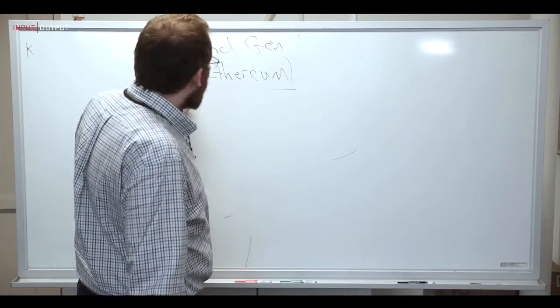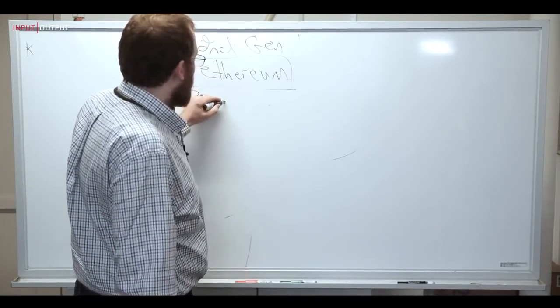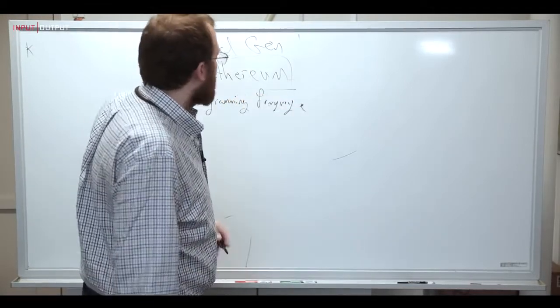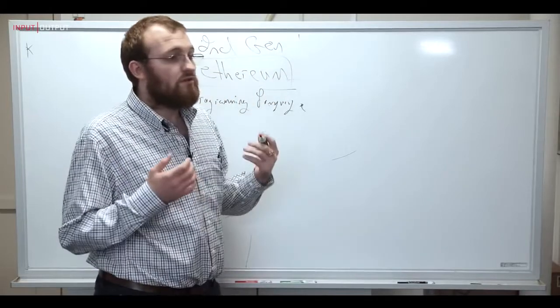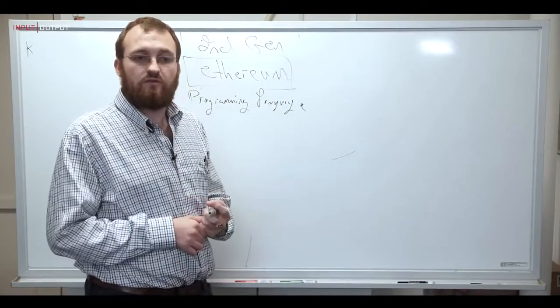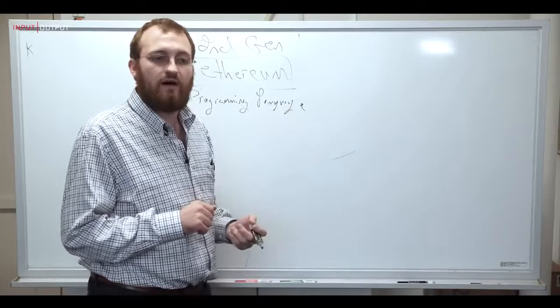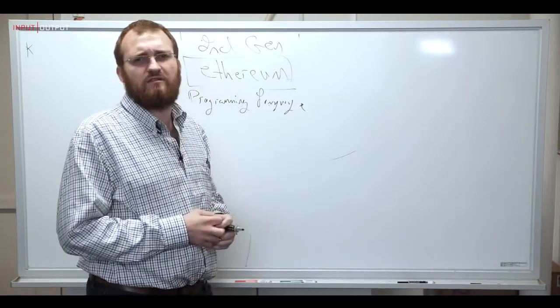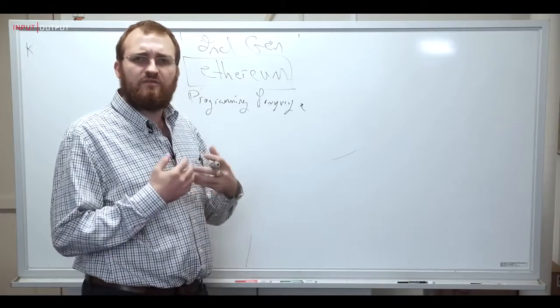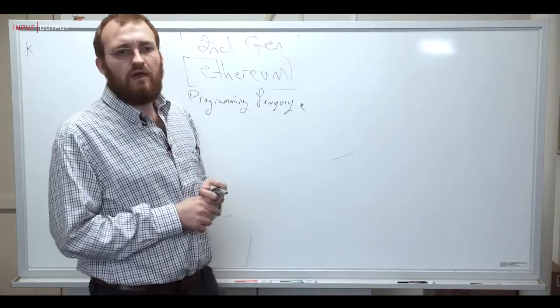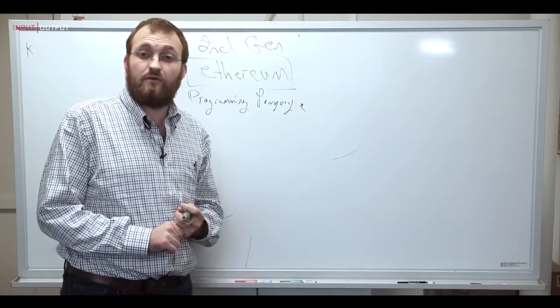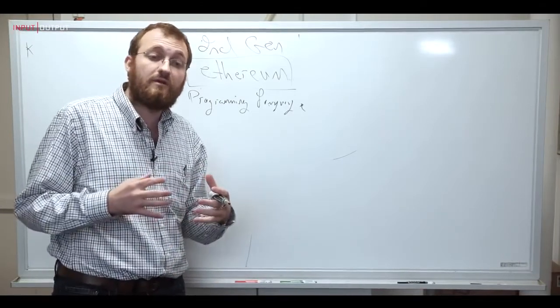So Ethereum brought a programming language to a blockchain. This programming language paradigm allowed smart contracts to be written to have customizable transactions. Now this paradigm like Bitcoin also took off and now Ethereum is among the largest of cryptocurrencies and has a huge developer community.